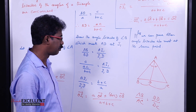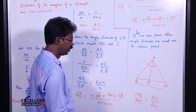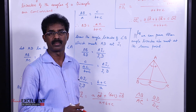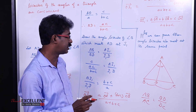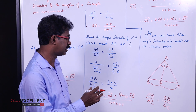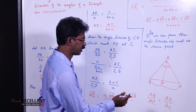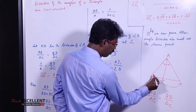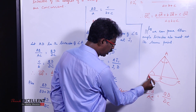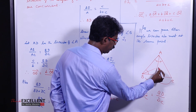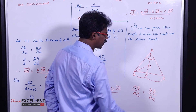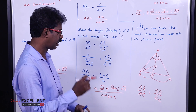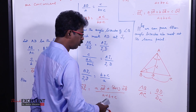You need to know what the incenter is. The incenter is the point of intersection of the angle bisectors. For each angle you draw a bisector, and where these bisectors meet is called the incenter.